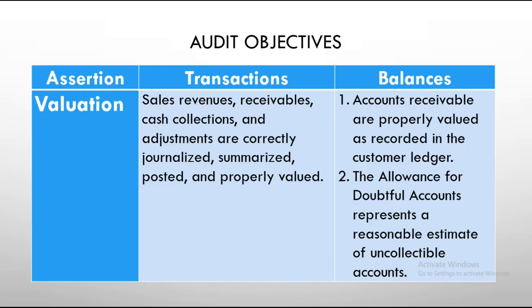The amounts from the different source documents should be appropriately transferred — what is in the source document, that same amount must be recorded by the bookkeeper or accountant. For balances, accounts receivable are properly valued as recorded in the customer ledger, and you check whether there is a need to provide an allowance for doubtful accounts representing a reasonable estimate of uncollectible accounts.